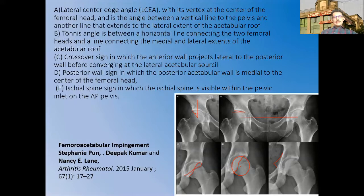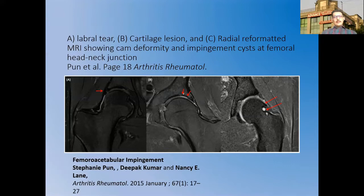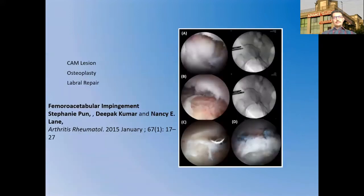The ischial spine sign is a sign in which the ischial spine is visible within the pelvic inlet on the AP view — again a sign of an anteverted pelvis. In the imaging shown, part A demonstrates a labral tear, part B a cartilage lesion, and part C a radial reformation of the cyst showing a cam lesion with the impingement zone just beneath it. This is taken from the femoroacetabular impingement article by Stephanie Poorn in Arthritis and Rheumatology, 2015.